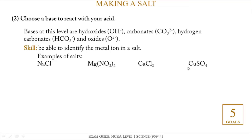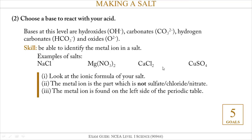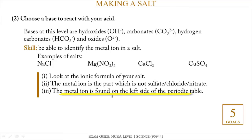If you're not sure which part is the metal, look at the ionic formula in the salt. The metal ion is the part that's not sulfate, chloride, or nitrate. For example, you've got chloride — so that's not the metal — it must be the Na, it must be sodium. You could also check that the metal ion you've identified is on the left side of the periodic table; it has to be on the left side.